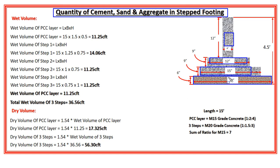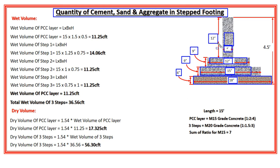The width of the PCC layer is 18 inches and the height of the PCC layer is 6 inches. The width of step 1 is 15 inches and the height is 9 inches. The width of step 2 is 12 inches and the height is also 9 inches. The width of step 3 is 9 inches and its height is also 12 inches.